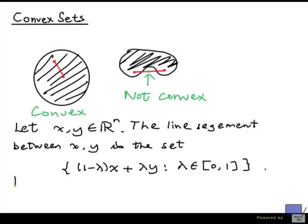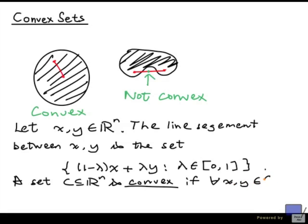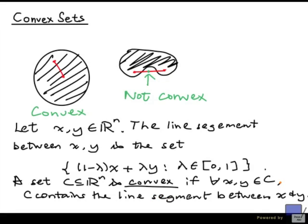Now, a set is said to be convex, so a subset of R^n is convex, if for all x and y in the set, C contains the line segment between x and y. So now we can talk about convex sets and line segments in N dimensions, not just in 1, 2, or 3 dimensions. So to check if a set is convex, you just need to check that it satisfies this definition. It doesn't look that easy, does it? Let's look at one special case.